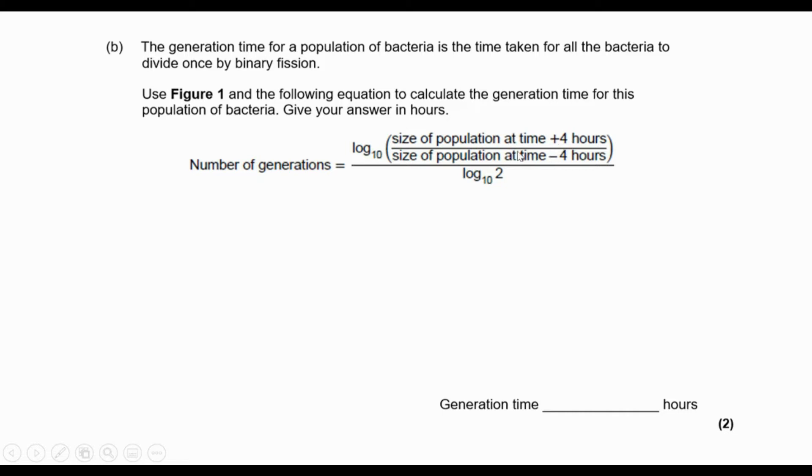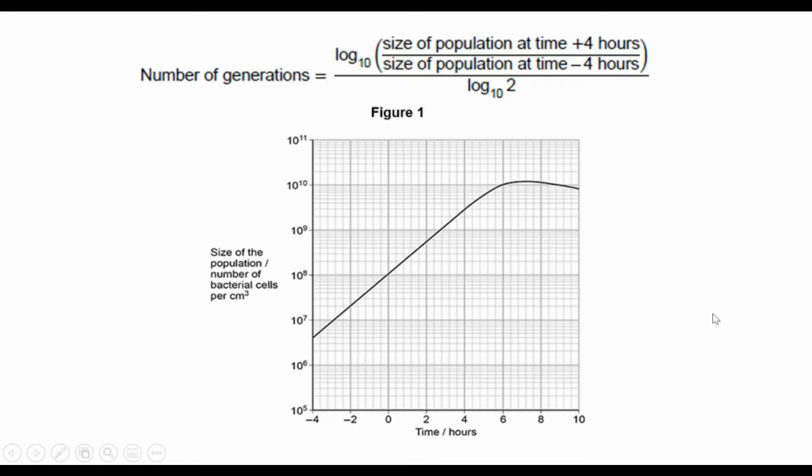First of all, we need to find the size of the population at time plus four and the size of population at time minus four. So let's have a look at the graph.